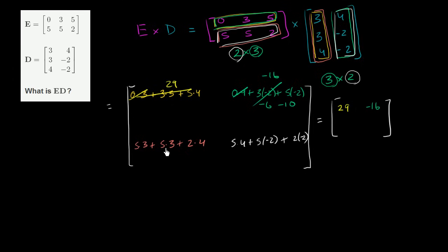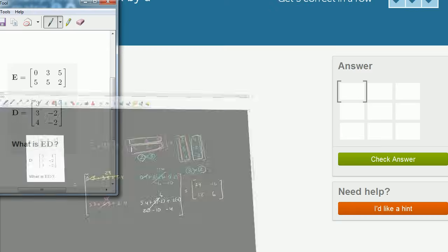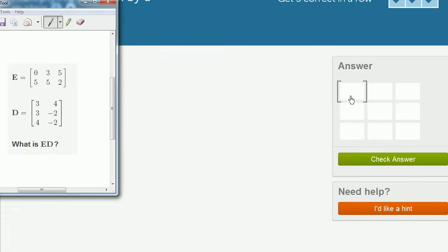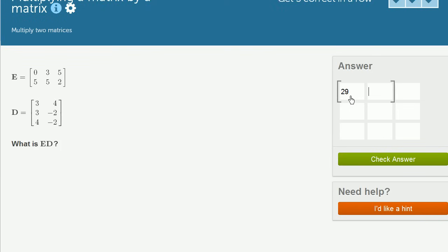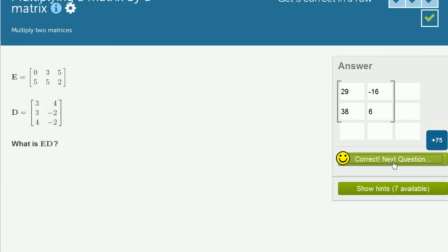This right over here, it's 15 plus 15, which is 30, plus 8. So this is 38. And then finally, this is 20, minus 10, minus 4. So this is going to be 6. So our result is [29, -16; 38, 6]. Let's check our answer, and we got it right.